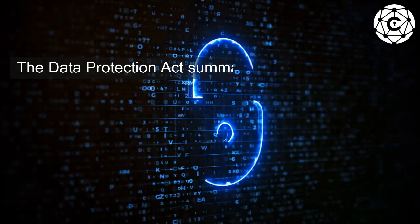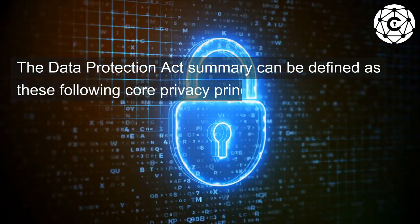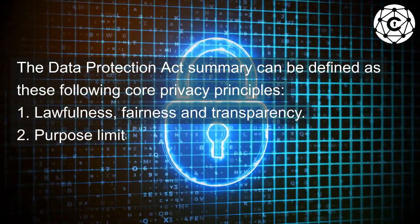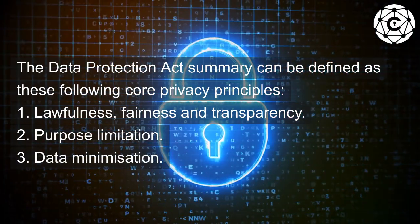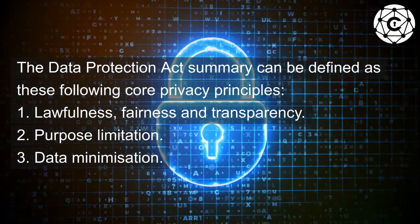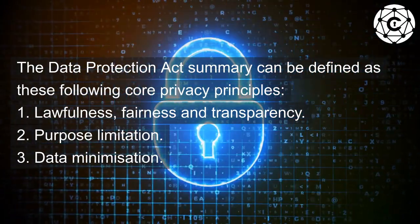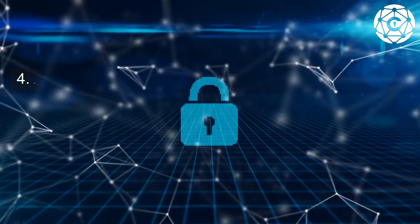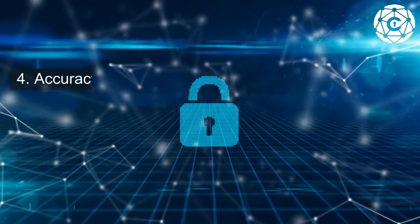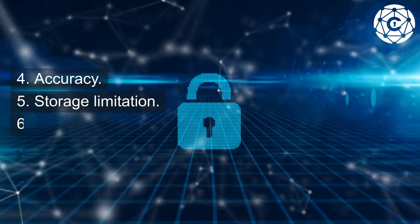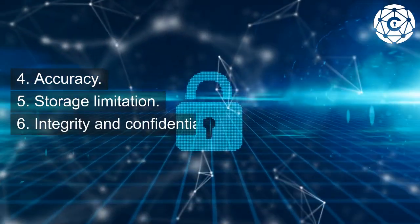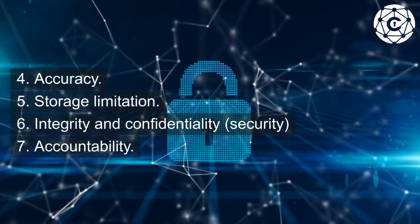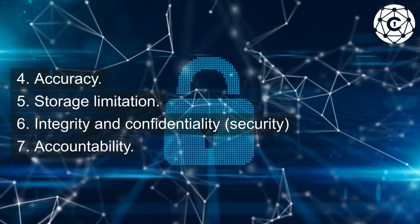The Data Protection Act summary can be defined by these following core privacy principles: 1. Lawfulness, Fairness and Transparency. 2. Purpose Limitation. 3. Data Minimization. 4. Accuracy. 5. Storage Limitation. 6. Integrity and Confidentiality, Security. 7. Accountability.